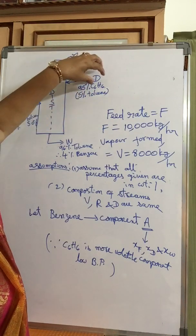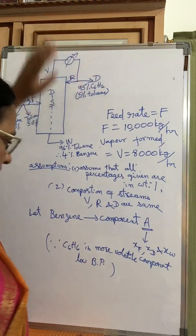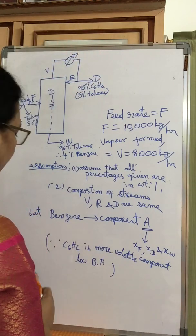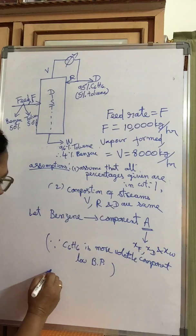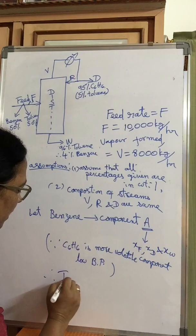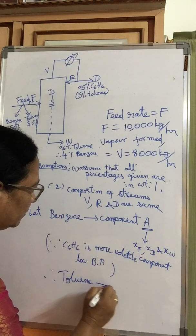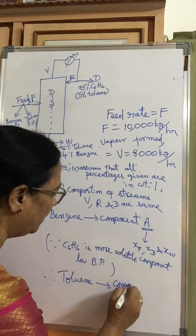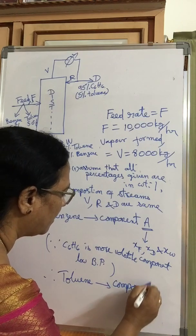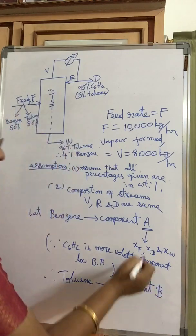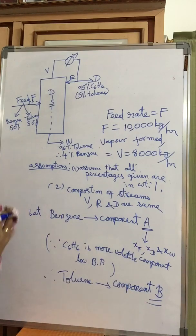We selected benzene as component A because more amount of benzene is present in the distillate, making benzene the more volatile component with a lower boiling point compared to toluene — though boiling points are not explicitly given. Therefore, toluene is component B.